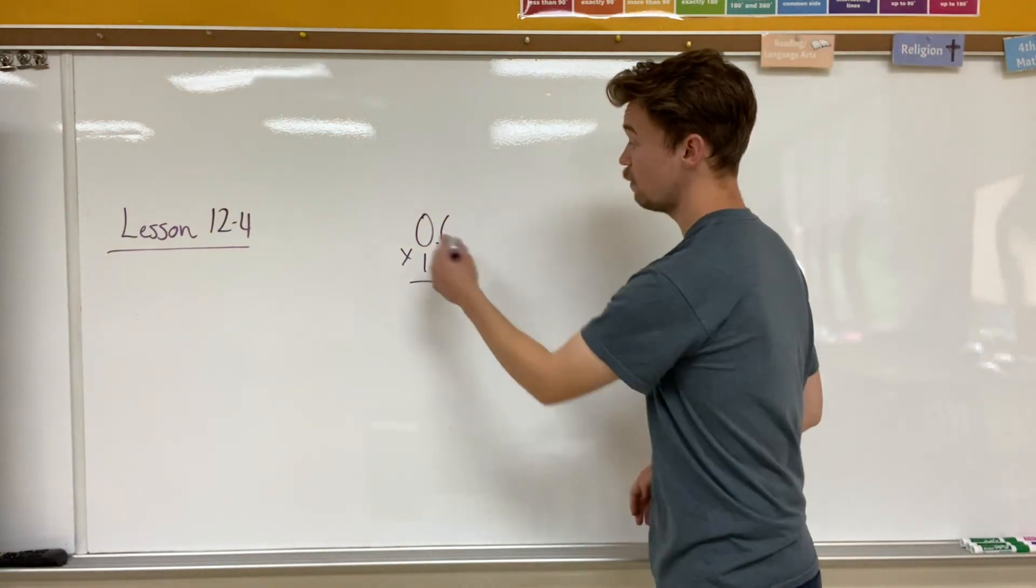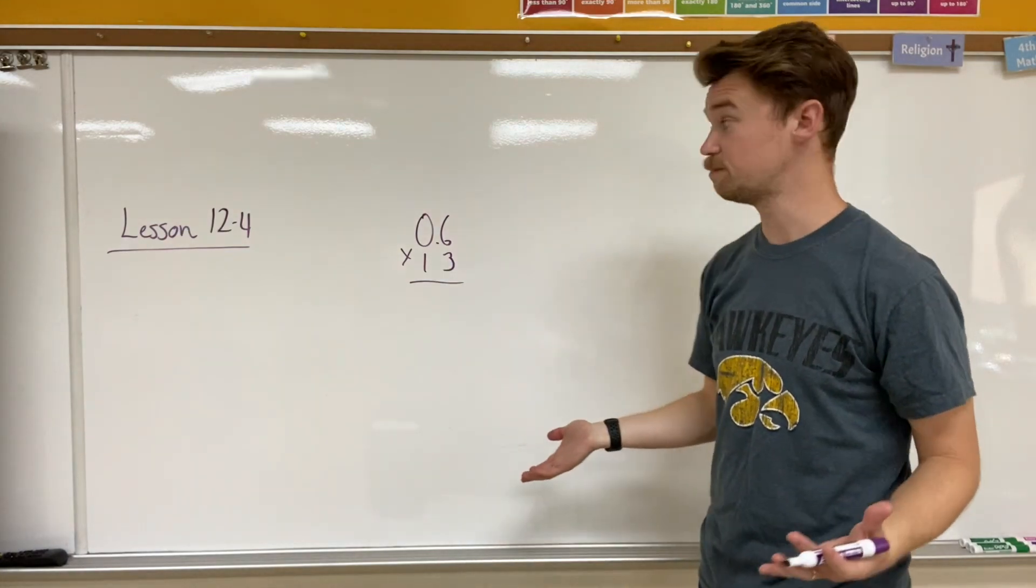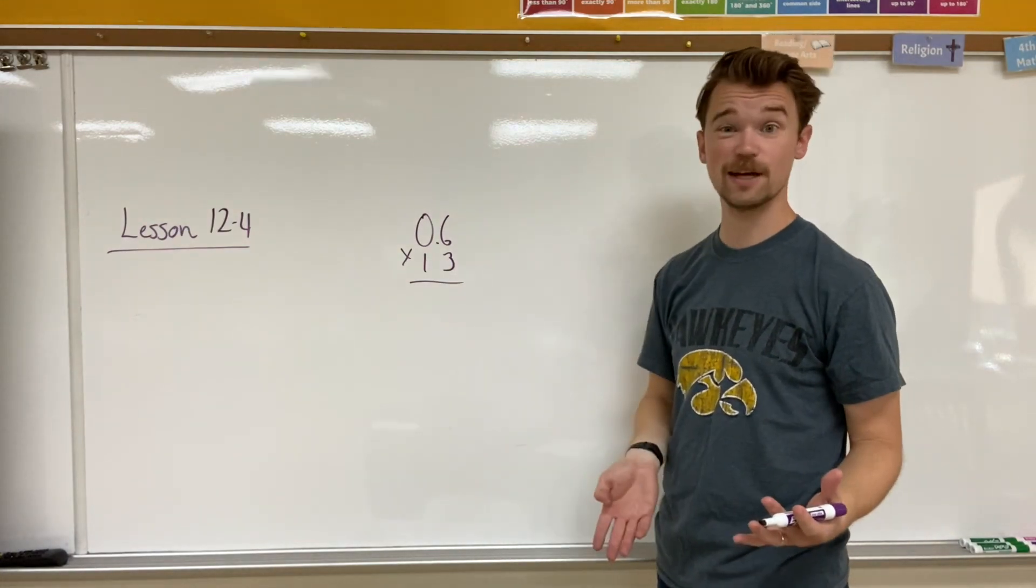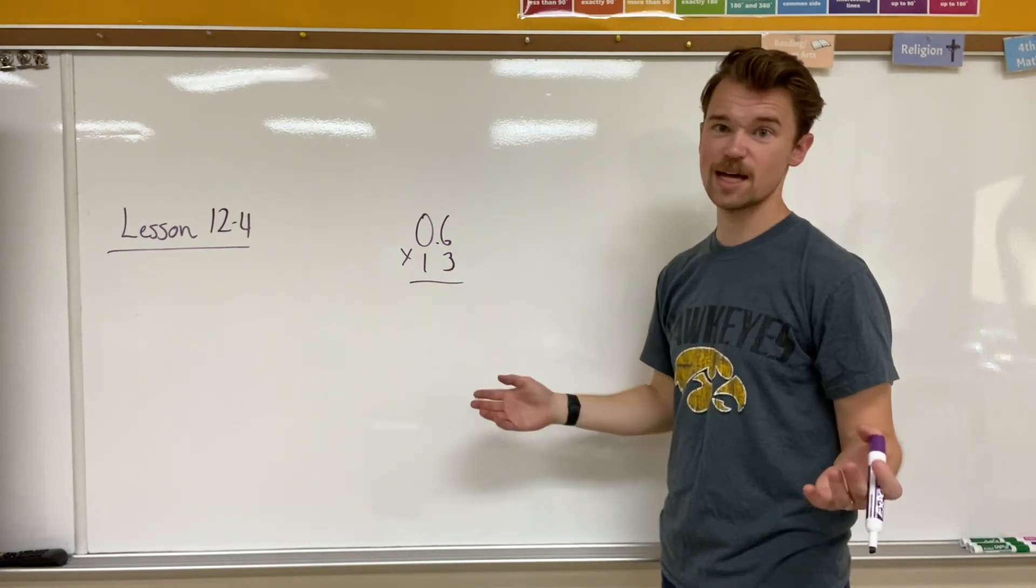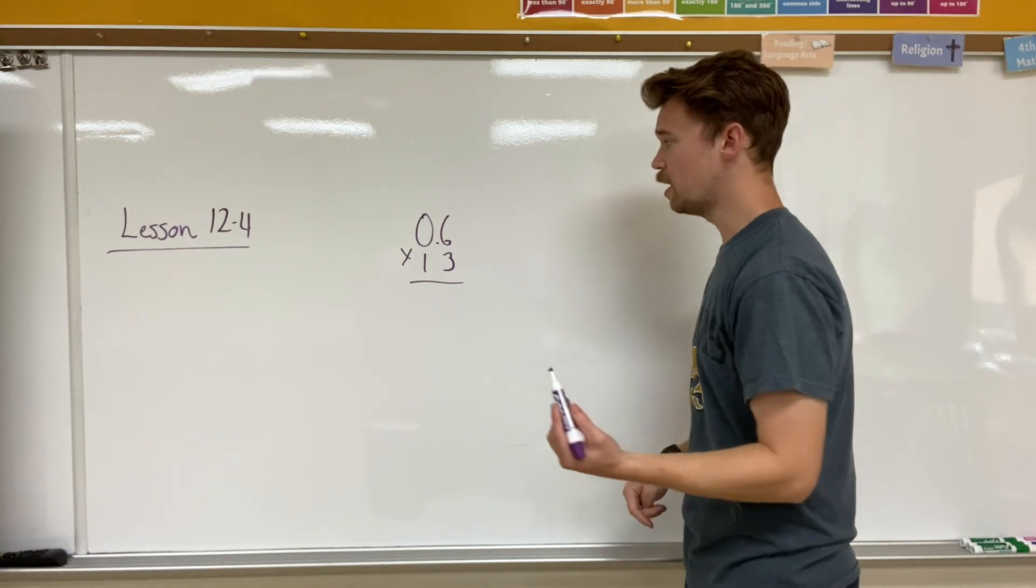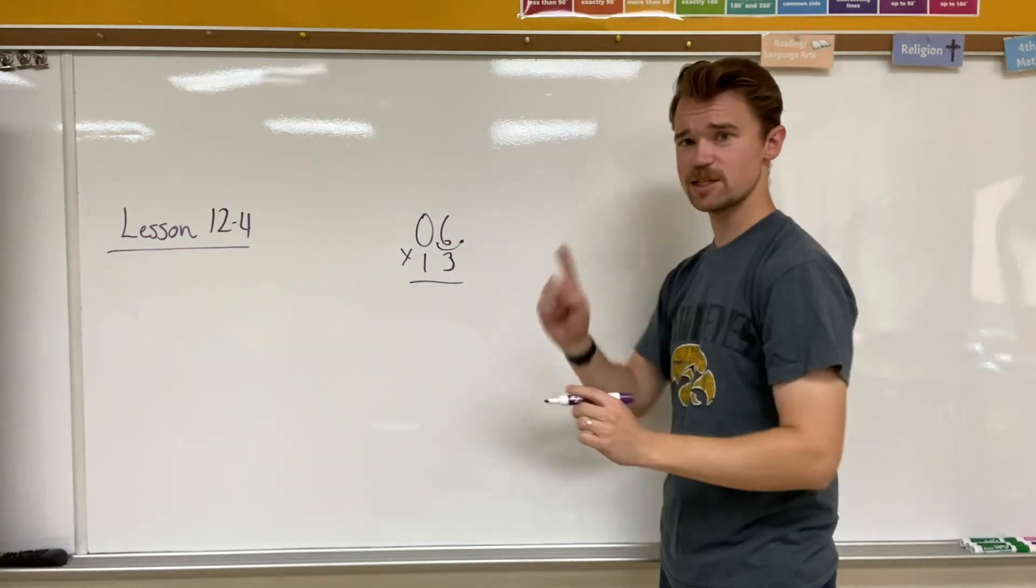So for my example here, I have 6 tenths times 13 and 13 is my whole number. I don't have to align the decimal places any fancy way when you multiply decimals. You line up the numbers as is and keep the decimal places where they need to be. But in this case, I have a decimal place. I need to move it to the end and you'll see why in just a second.